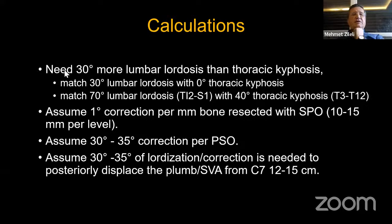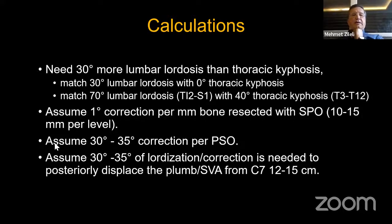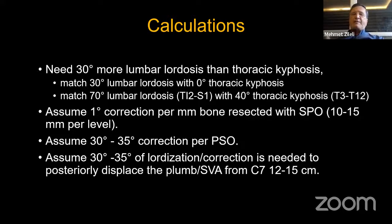If you need 30 degrees more lumbar lordosis than thoracic kyphosis, you must match 30 degrees lumbar lordosis with 0 degree thoracic kyphosis. Assuming 1 degree correction per mm of bone resection with Smith-Petersen osteotomy, and 30 to 35 degrees correction with PSO — load visualization correction is necessary. In order to avoid kinking, we must be careful and close the posterior gap: 12 to 15 centimeters maximum to provide 30 to 35 degrees correction.